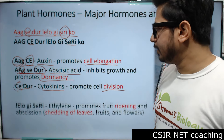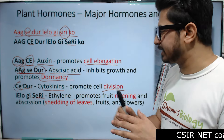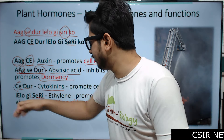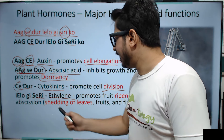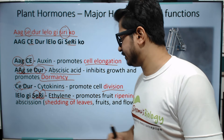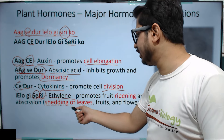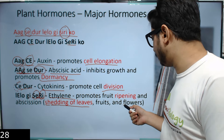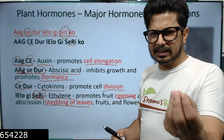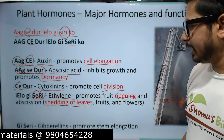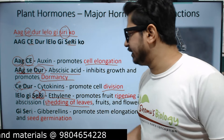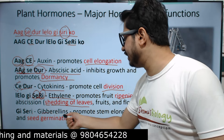'Le Lo' — 'E' is for Ethylene. 'RI' is for ripening of fruit, and 'AC' is for shedding of leaves. So Ethylene's job is to ripen fruits and cause shedding of leaves.